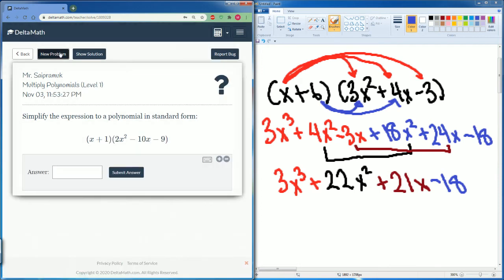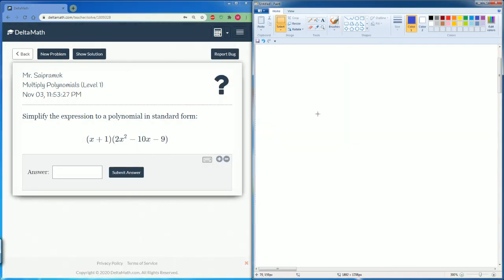Let's do one more problem. Same process. Here we have x plus 1, then you have 2x squared minus 10x minus 9.